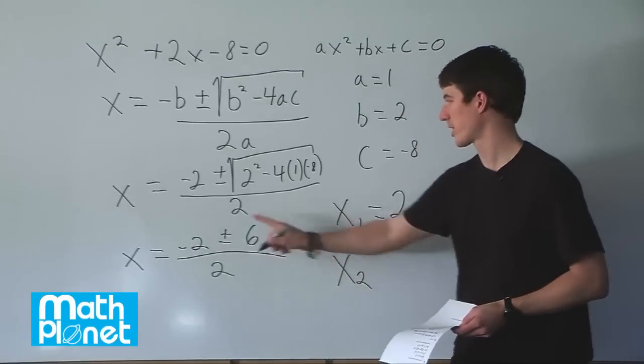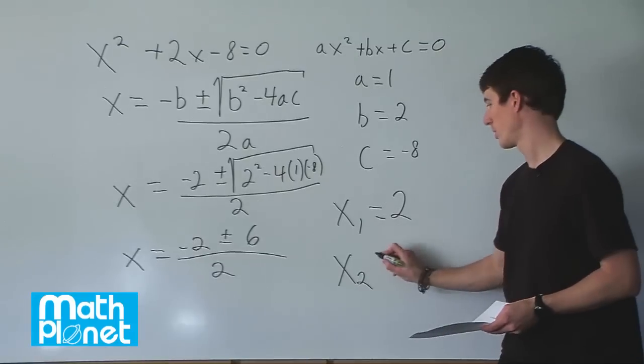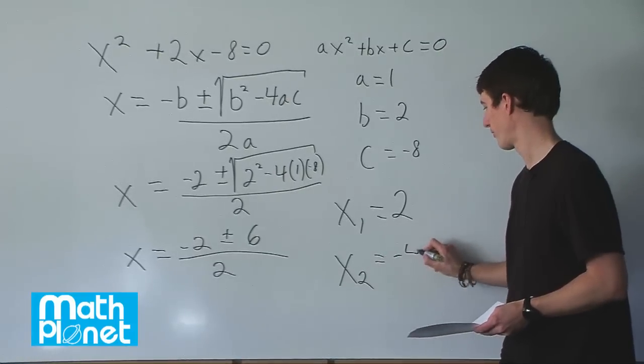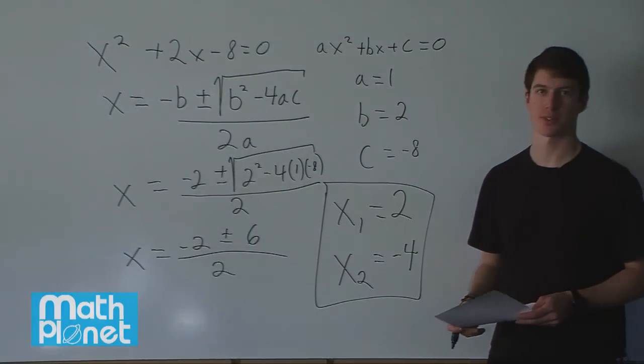And x2, which is negative 2 minus 6, which is negative 8 over 2, which is negative 4. So these are our two answers for this quadratic equation.